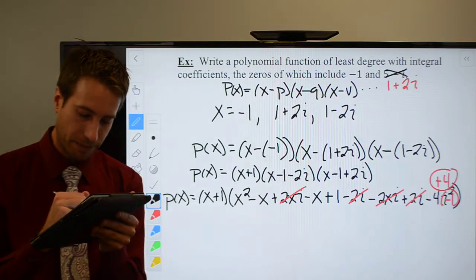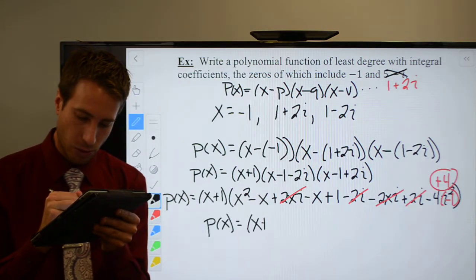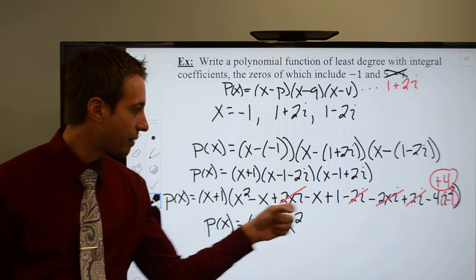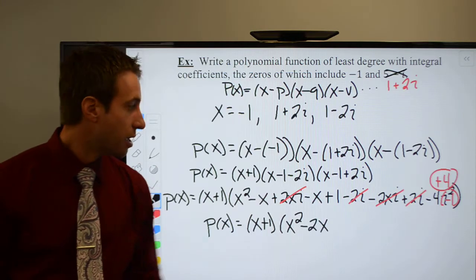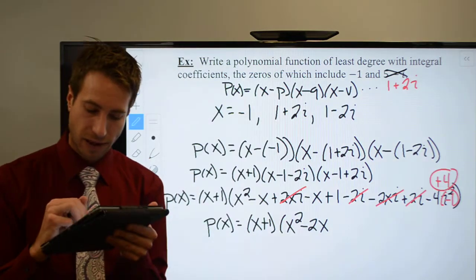Let's go ahead and rewrite this. P of x is equal to x plus 1, and everything that's left: x squared, negative x, negative x would be minus 2x, positive 1 and positive 4 plus 5.